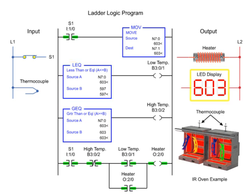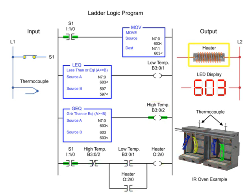Reaching 603 degrees or more, the high temp output is enabled since source A is equal to source B of the greater-than-or-equal-to instruction. When the high temp output is true, the heater turns off and remains off until the temperature reaches 597 degrees or lower.